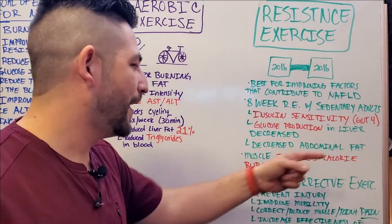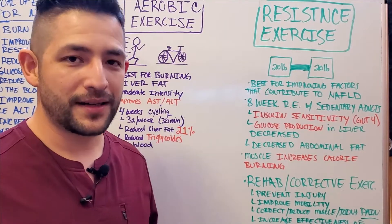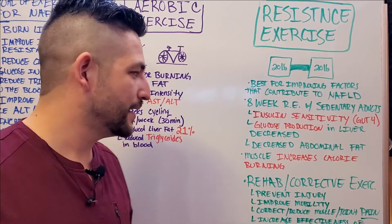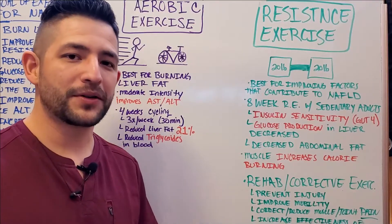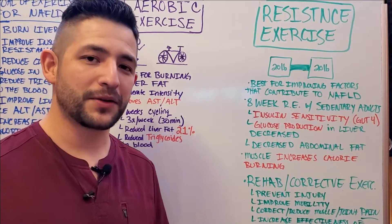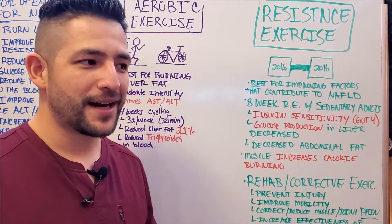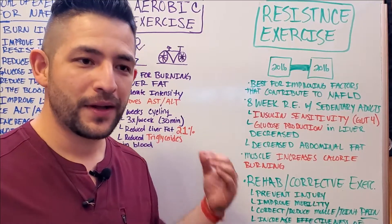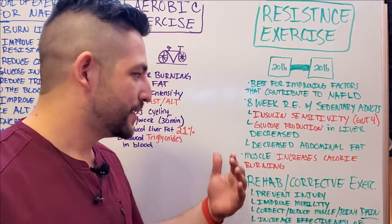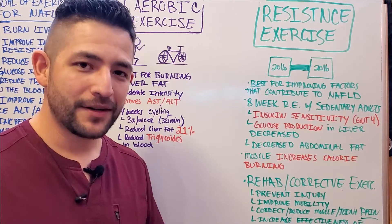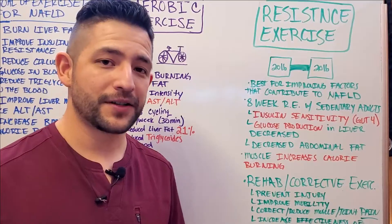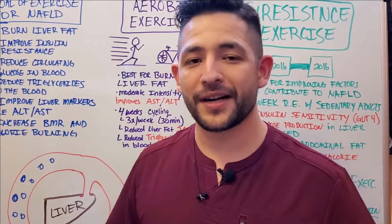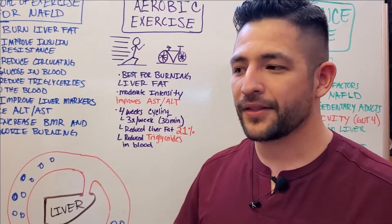There was also a decrease in abdominal fat, which is important because abdominal fat is one of the indicators of a fatty liver. Additionally, the increase in muscle strength and muscle size increased calorie burning. When we build muscle, those muscles require more energy to function — it's like upgrading your car's engine from a V6 to a V8 or V12, requiring more fuel. As muscles get bigger and stronger, they require more calories to function, which means your basal metabolic rate goes up because you need more calories to sustain those stronger, larger muscles.